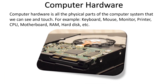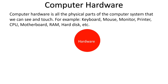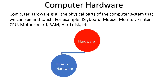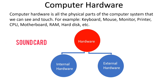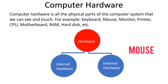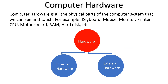Computer hardware is further categorized into two types: internal hardware and external hardware. Internal hardware are those parts of the computer system that are inside the CPU case, or that we cannot directly see — for example, the microprocessor, motherboard, RAM, graphics card, sound card, and modem. External hardware are those physical parts that we can see directly from the outside — for example, the keyboard, mouse, monitor, printer, scanner, and speaker. Let's start with the internal hardware.